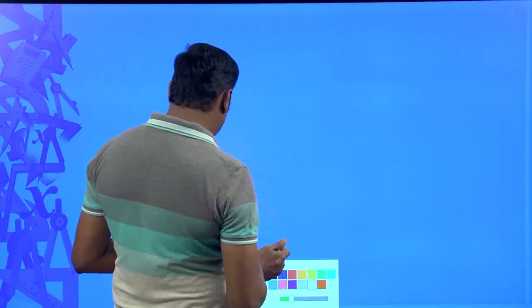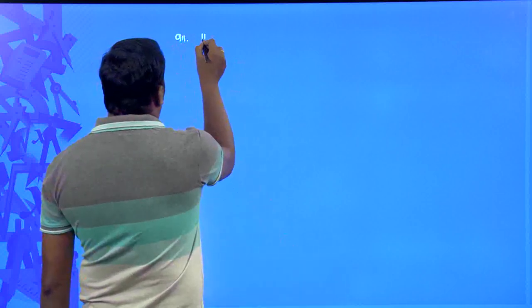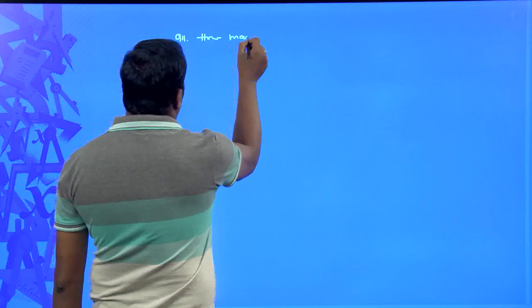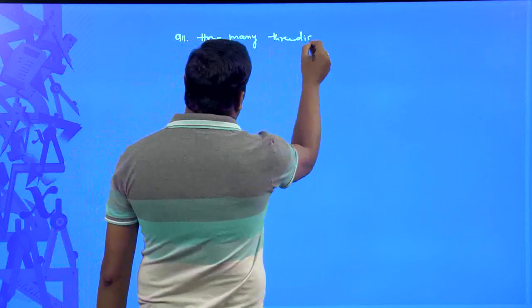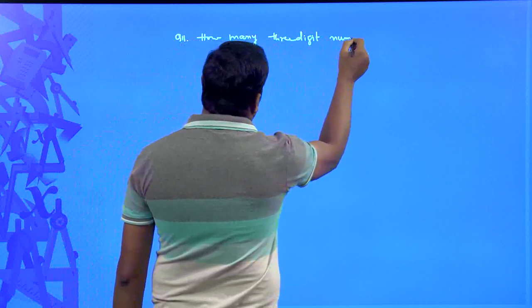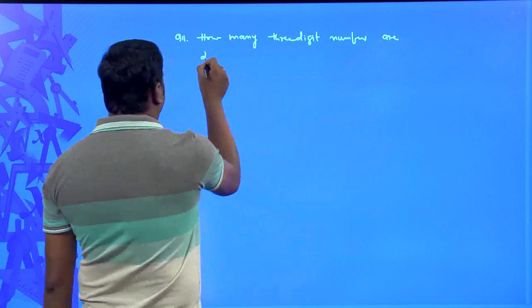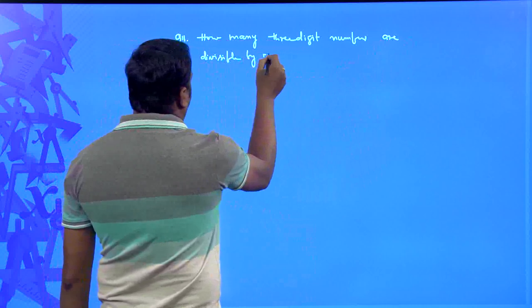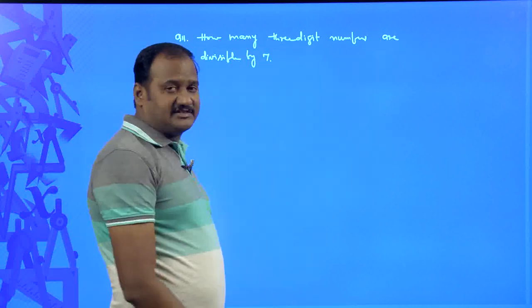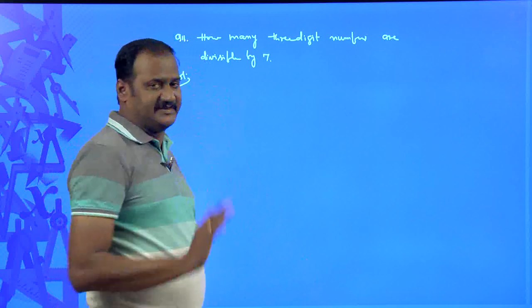The first problem is: how many three-digit numbers are divisible by 7? To answer this, you will first have to understand what three-digit numbers are.